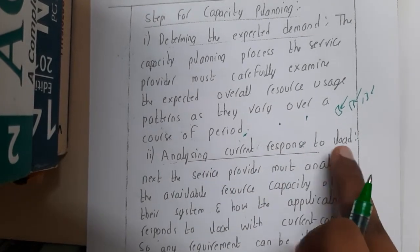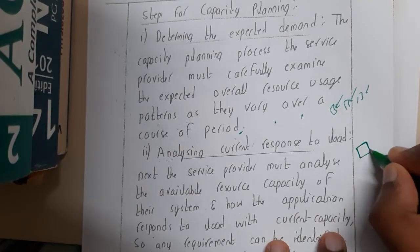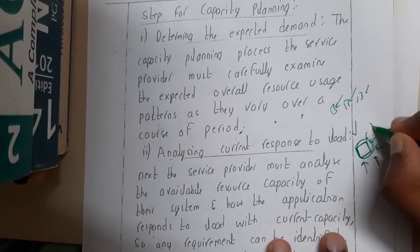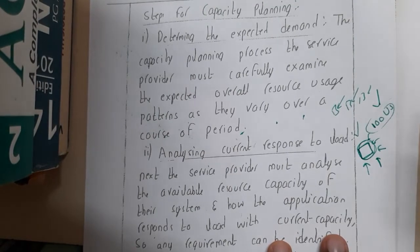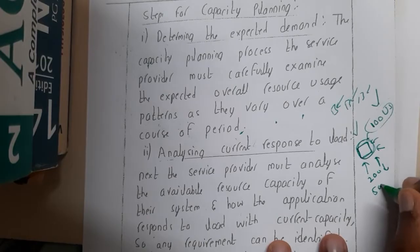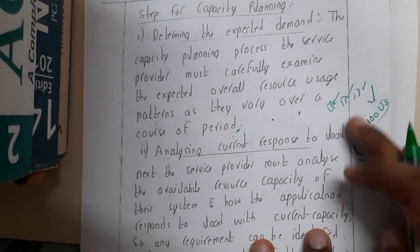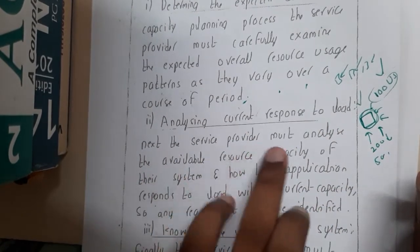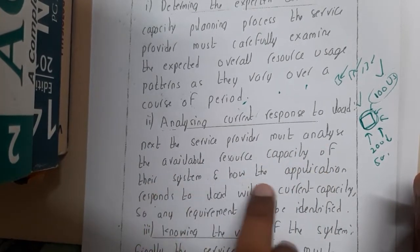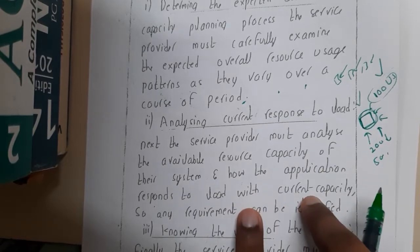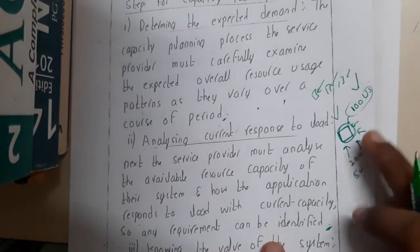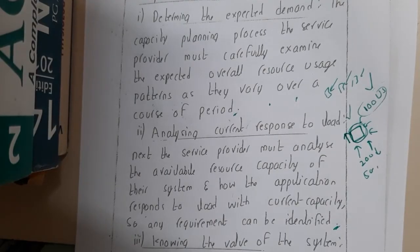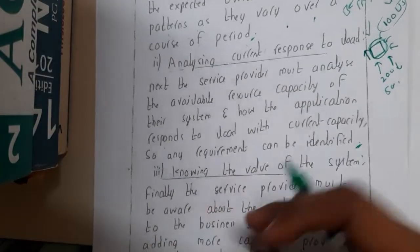The second step is analyzing the current response to the load. Based on your current speed, you generate some users and judge whether the capacity is holding properly. For example, for 100 users the website runs perfectly, at 200 it becomes slow, and beyond 500 it becomes very slow — they will test and check this. The service provider must analyze the available resource capacity of their system and how the application responds to the load with current capacity, so any requirement can be identified.